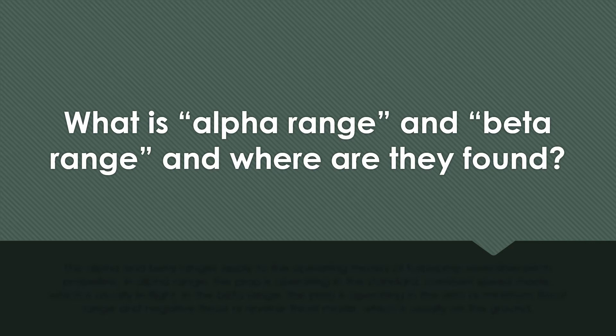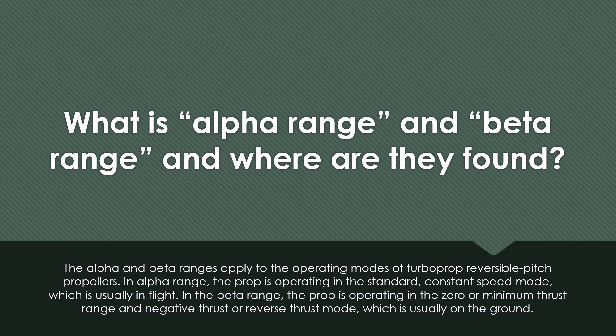What is alpha range and beta range and where are they found? The alpha and beta ranges apply to the operating modes of turboprop reversible pitch propellers. In alpha range, the prop is operating in the standard constant speed mode, which is usually in flight. In the beta range, the prop is operating in the zero or minimum thrust range and negative thrust or reverse thrust mode, which is usually on the ground. So alpha in the air, beta on the ground.